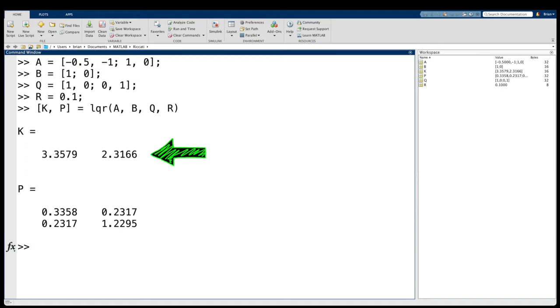Plus, it also returns the solution to the algebraic Riccati equation, which is this matrix P. And don't worry about what this is right now, we're going to come back to it later.